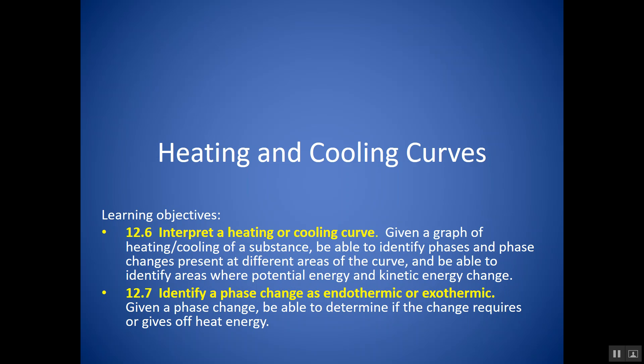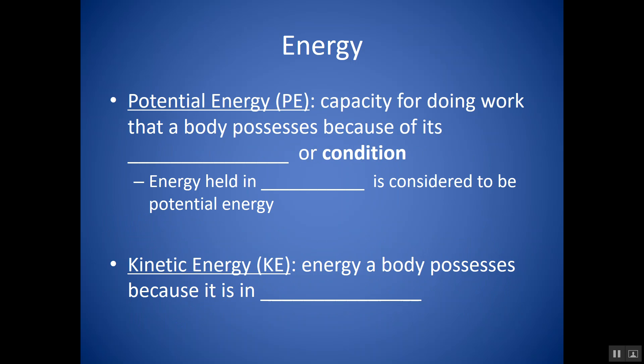In this lesson, we're going to look at heating and cooling curves. Before we do so, let's define two types of energy. One type is potential energy, which you might see the symbol PE for. That's the capacity to do work because of the position or condition that you're in.